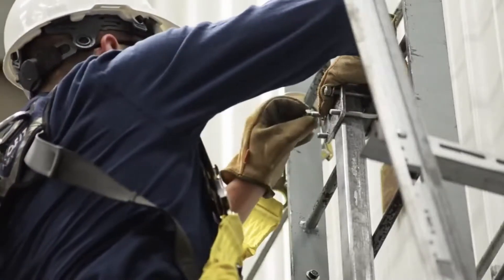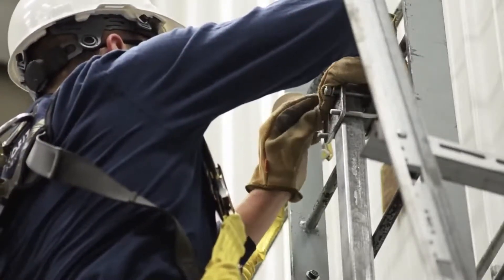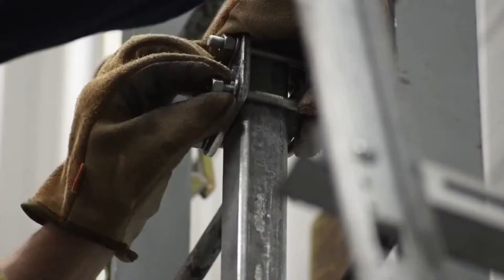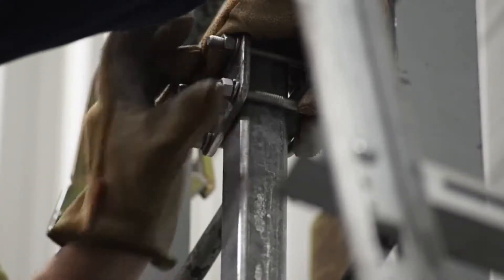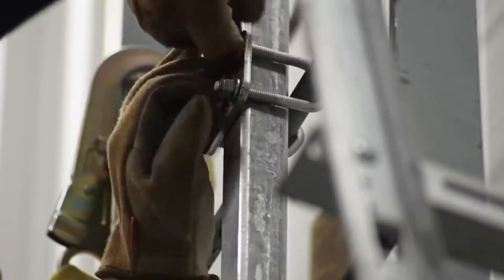It is important to tighten the fasteners in a diagonal pattern, starting with the top left, then move diagonally to the lower right, then the top right, and finish with the lower left.